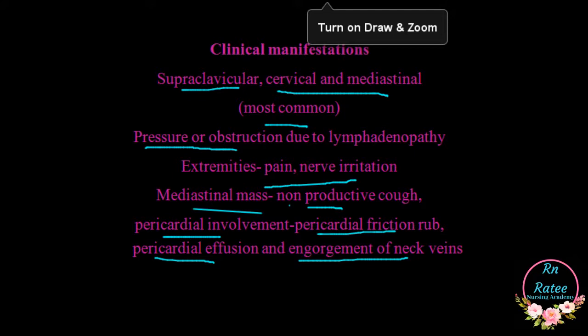The most common areas are supraclavicular, cervical, and mediastinal. When lymphadenopathy is starting, it is asymptomatic and painless. As lymph nodes enlarge, pressure develops and obstruction occurs. We can see some signs like extremity signs, nerve irritation, and in the mediastinal portion, a non-productive cough, which is a very common sign in this condition.